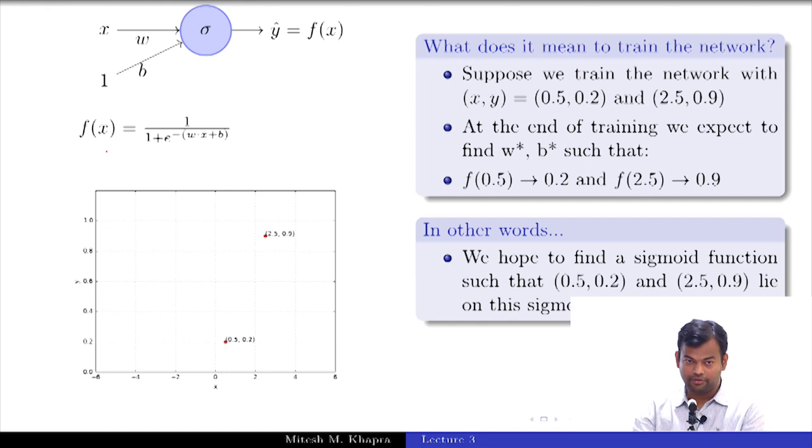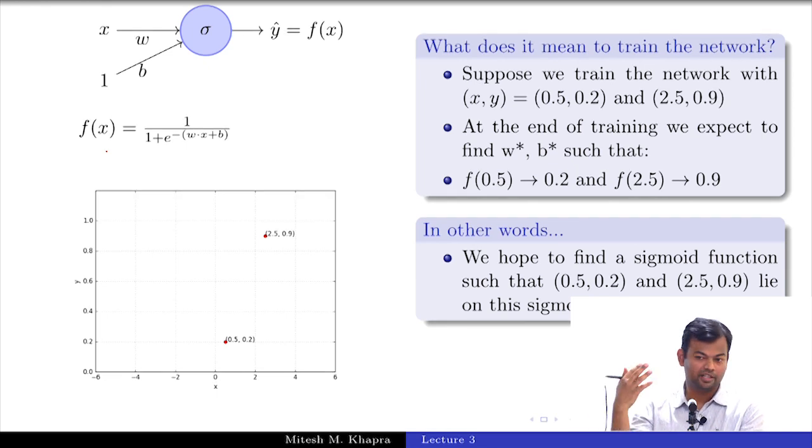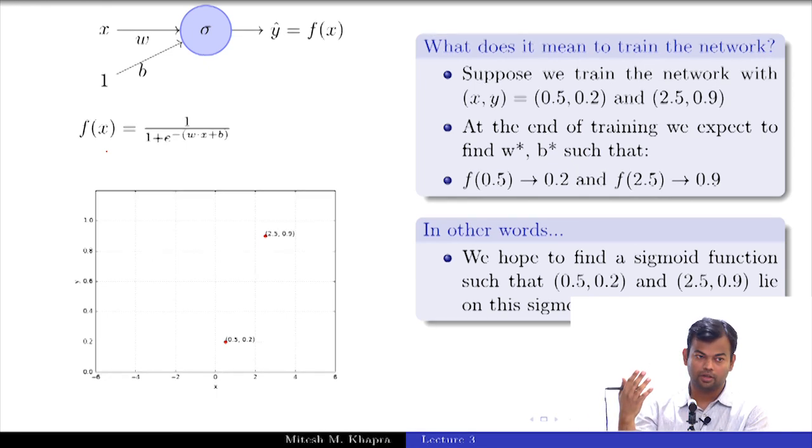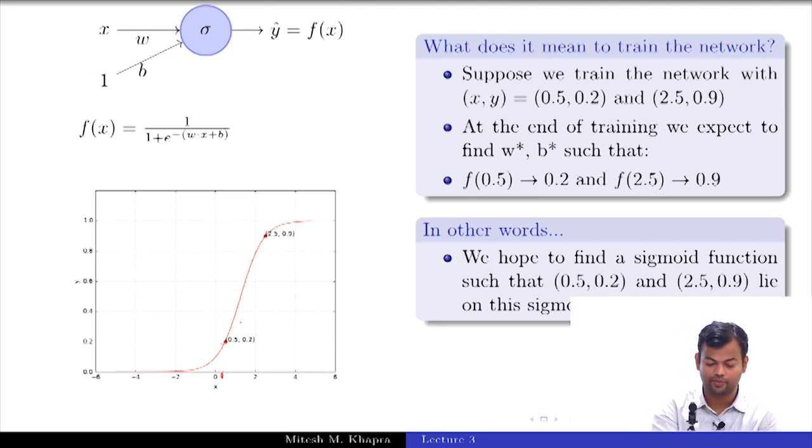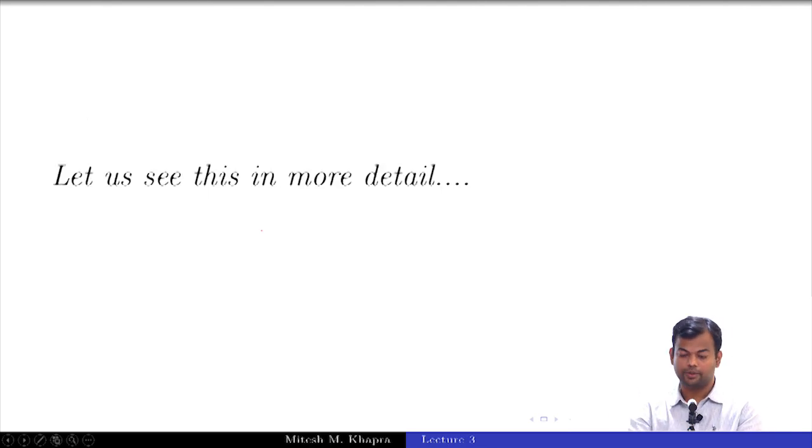In other words we hope to find a sigmoid function such that these two points lie on that function. Can you imagine a geometric picture for this? What would happen actually? This is what will happen. So you will get a sigmoid function such that these two points lie on that, and that exactly means that when I plug in this value I will get this value and when I plug in this value I will get this value. That is what it means.